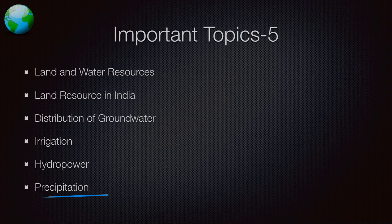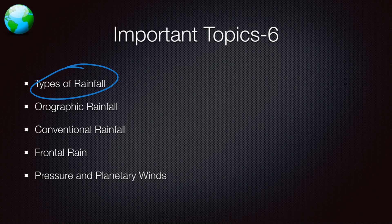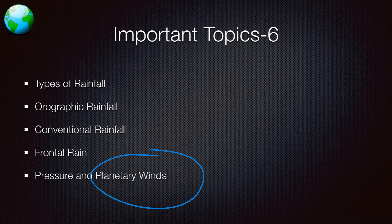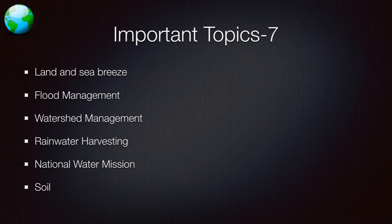These are the topics which, if they are mentioned in the news, you should read those news items. Types of rainfall — what are the types of rainfall, what is orographic rainfall (it has something to do with mountains), conventional rainfall, monsoon rainfall, what is frontal rain, how formation of a front happens and then rain occurs. What are planetary winds, all these pressure belts — all these things you need to know.